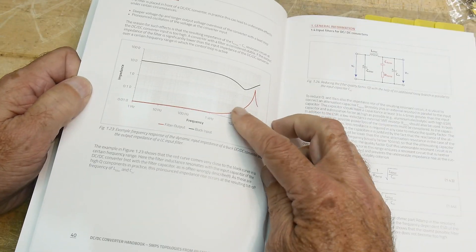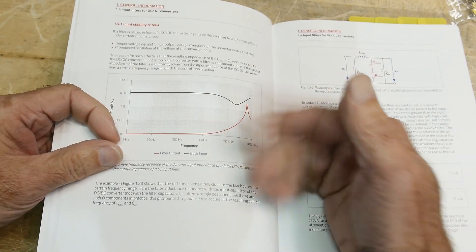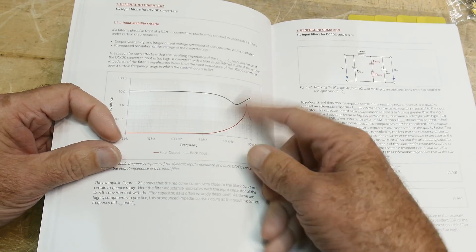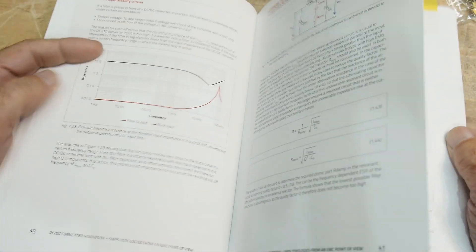It talks about a whole bunch of issues. Input stability, depending on if you have a filter on the input, that may cause a type of resonance. Anyway, they have a whole bunch of information here. So I think it's an interesting book.